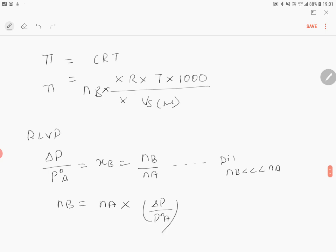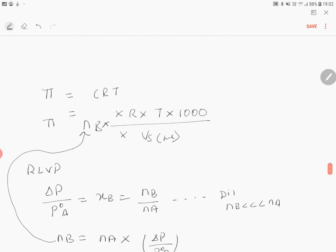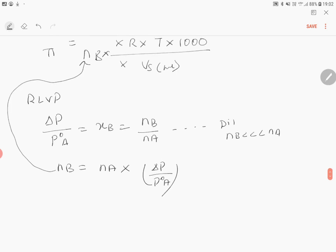That means NB is equal to NA into Delta P by P naught A. We'll substitute this value of NB over here. Now we will get the relation between osmotic pressure and relative lowering of vapor pressure.